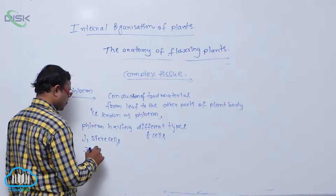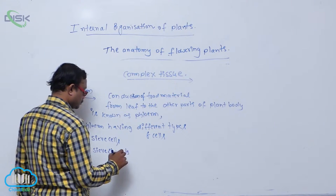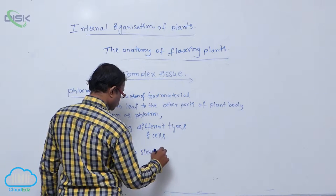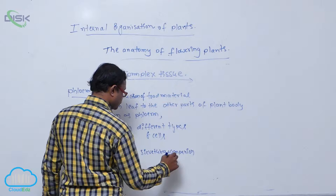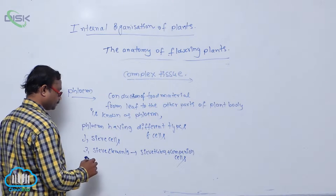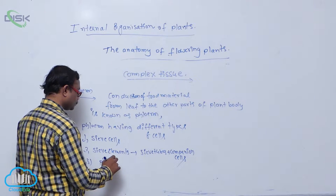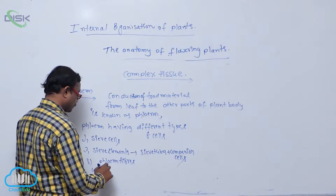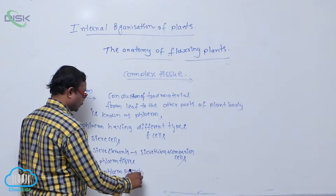The second component is sieve elements, known as sieve tubes plus companion cells. The third one is phloem fibers. The last one is phloem parenchyma.